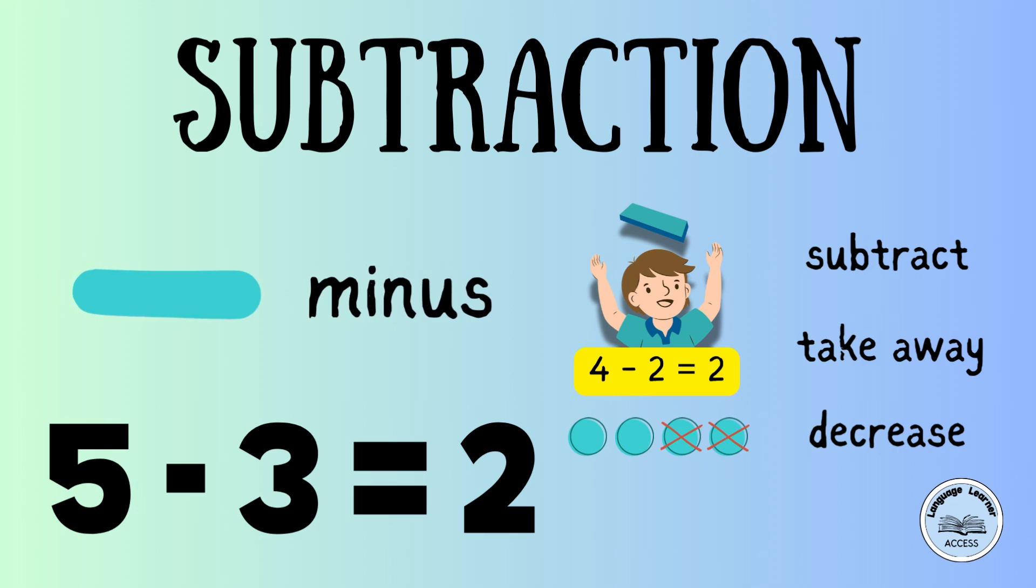Subtraction is another math operation. The symbol for subtraction is minus. When we use the minus symbol, we take away numbers. For example, 5 minus 3 equals 2. Some verbs used to represent subtraction are subtract, take away and decrease.